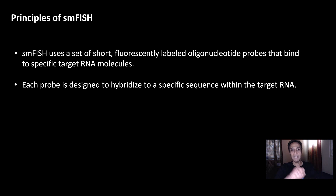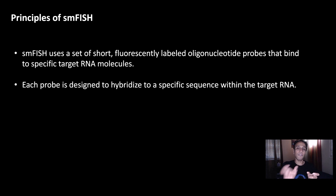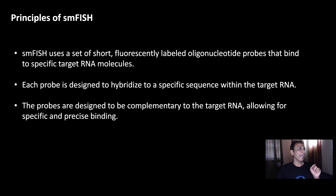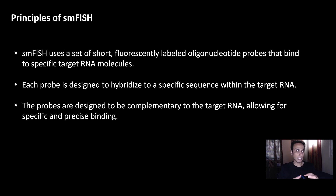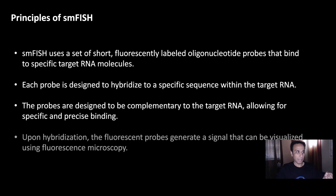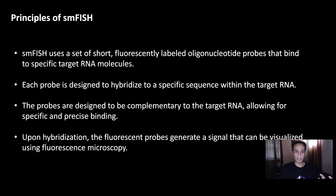Each probe — and you can have multiple probes — is designed to hybridize to a specific sequence inside the RNA. The probes are designed to be complementary to the target RNA, so they bind to a specific RNA molecule upon hybridization. The fluorescent probes then generate a signal that can be visualized using fluorescence microscopy.